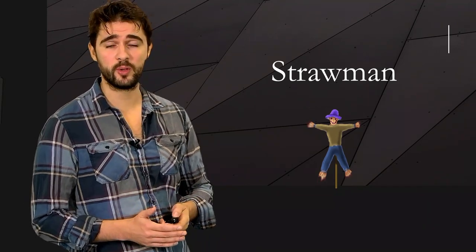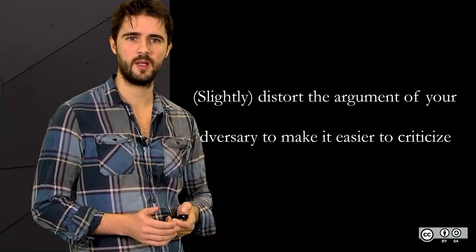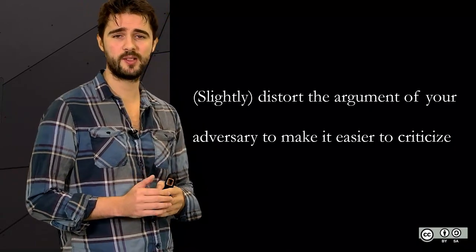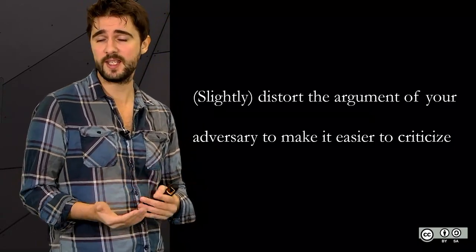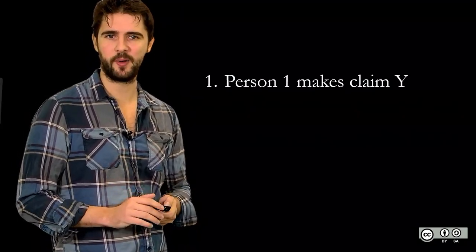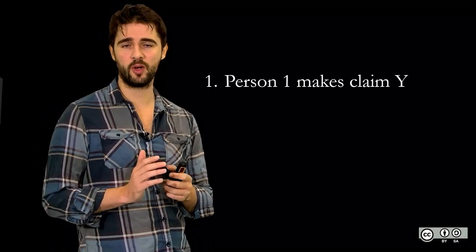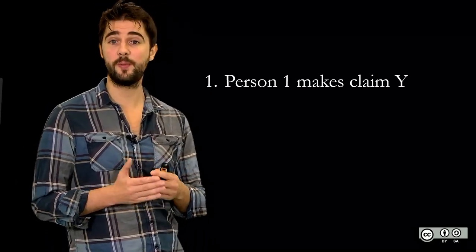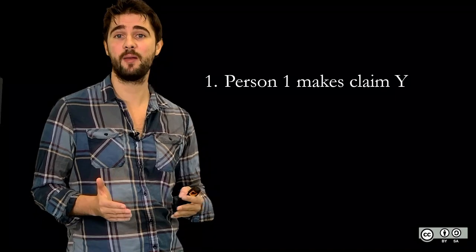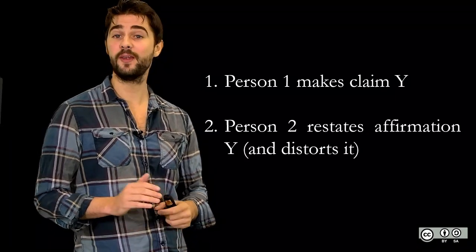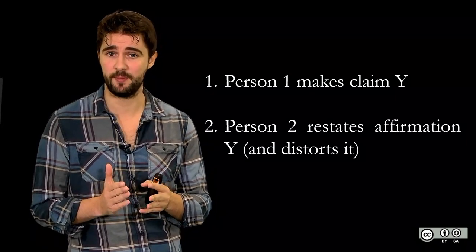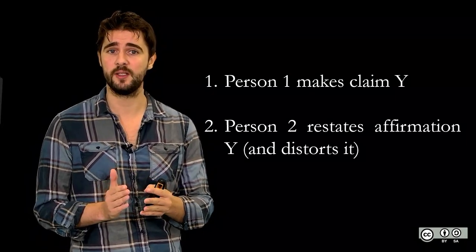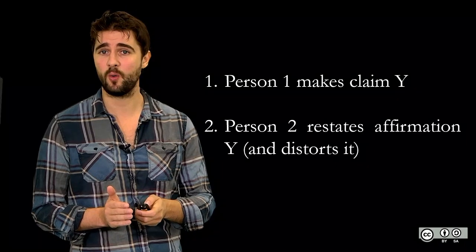In this video we are going to talk about the strawman technique. The idea of a strawman is to slightly distort the argument of your adversary to make it easier to criticize — sometimes not so slightly. The global structure is the following: first, person one makes claim Y, and then the adversary restates this claim and distorts it a little. We are going to call it Y'.